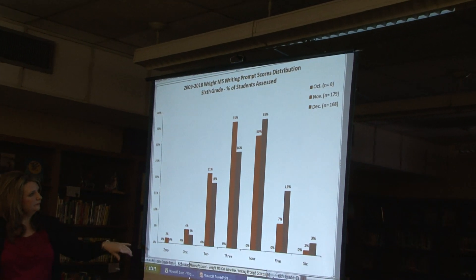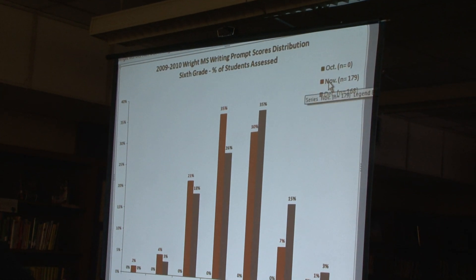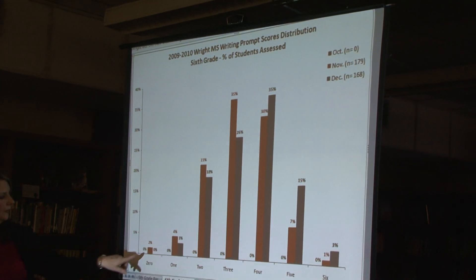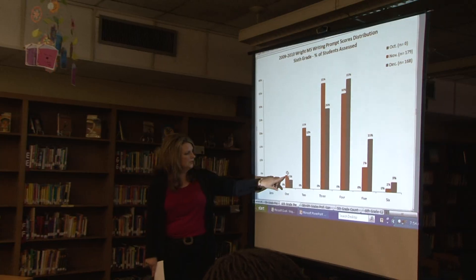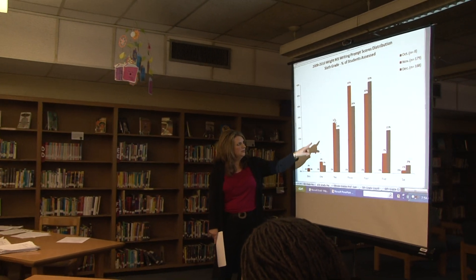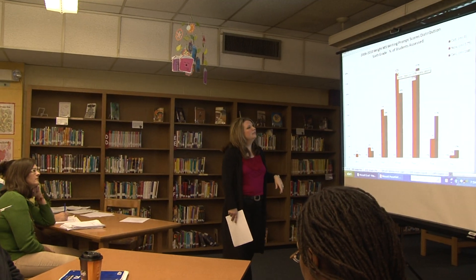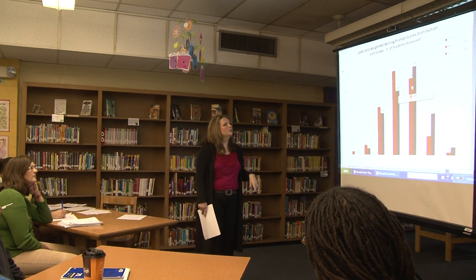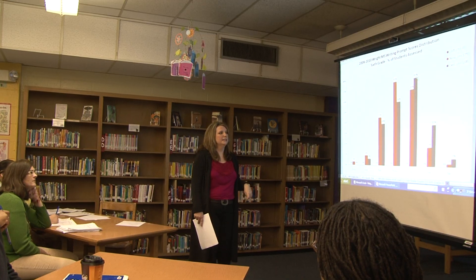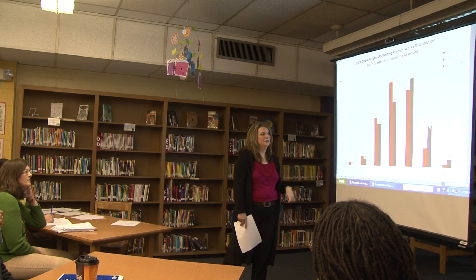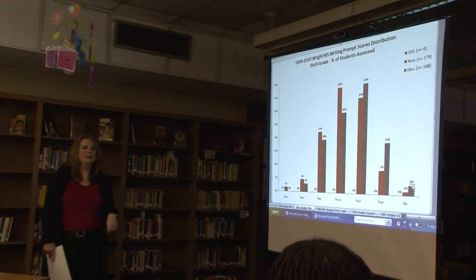For sixth grade, we're looking at November to December data. It looks like you have 2% zeros; ones decreased from 4 to 3%; twos decreased from 21 to 18%; threes from 35 to 26%; and your fours increased from 30 to 35%. Tremendous gain on your fives from 7 to 15%, and your sixes from 1 to 3%.